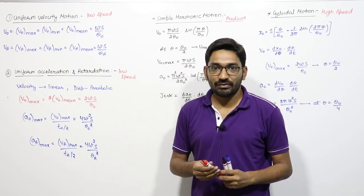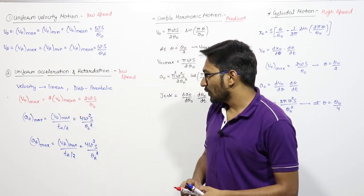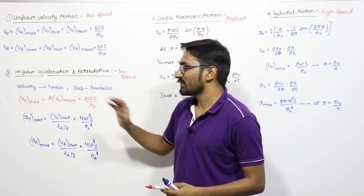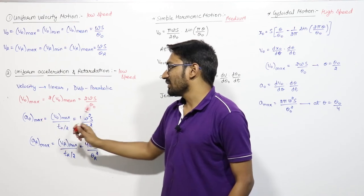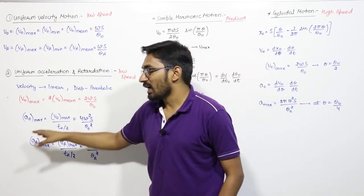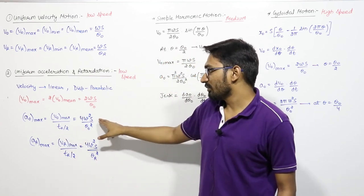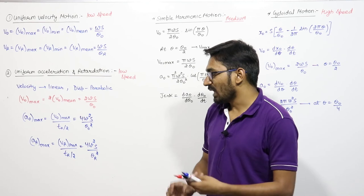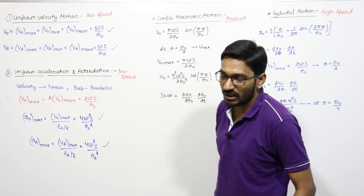Second is uniform acceleration and retardation. Here the velocity profile is linear and displacement is parabolic. Maximum outstroke velocity = 2ωS/θ₀ (twice the mean velocity). Maximum acceleration = 4ω²S/θ₀² and maximum retardation during return stroke = 4ω²S/θ_r².